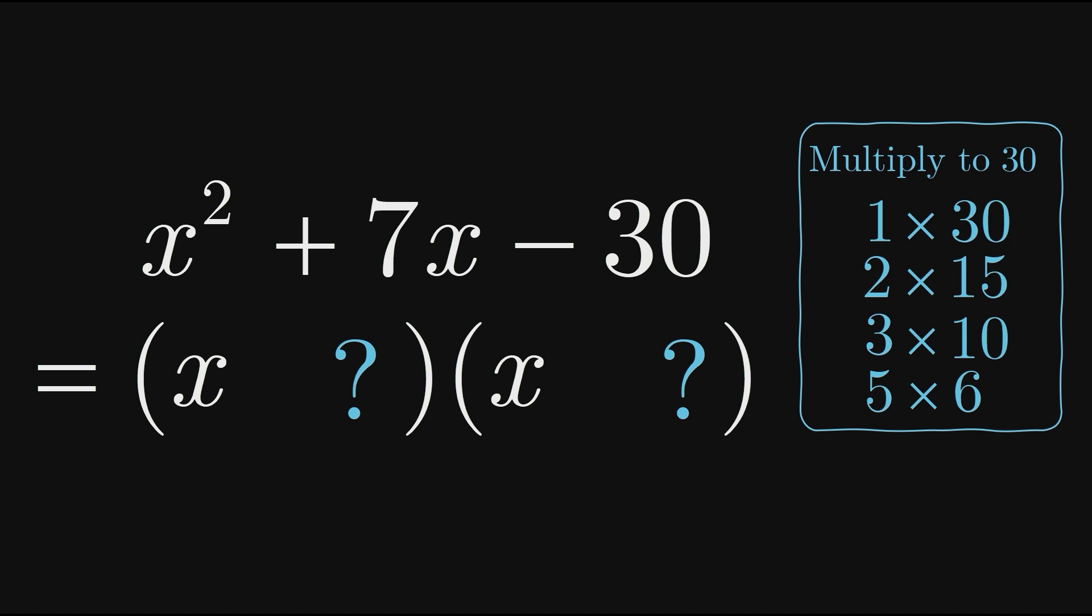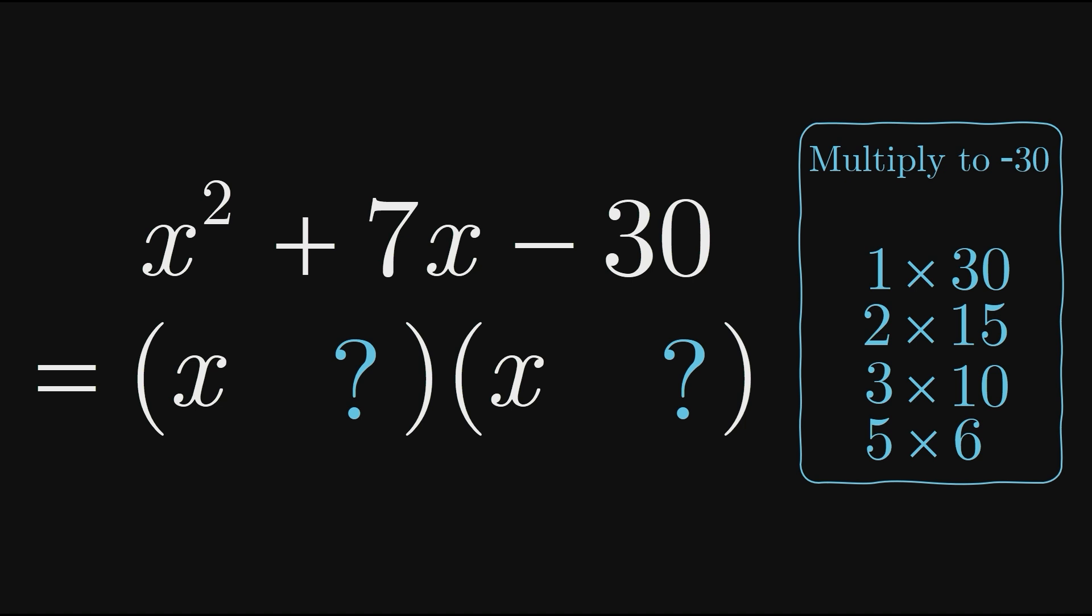We know that one value in each of these pairs must actually be negative since they're supposed to multiply to negative 30. We also know that the two values must add to 7. So at this point, we can look for the pair that would add to 7 if one of the values was negative.